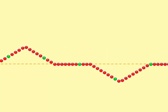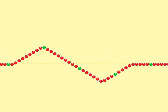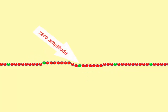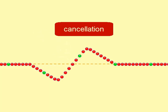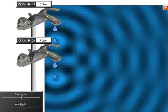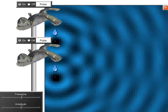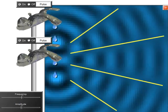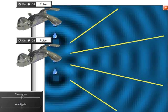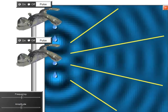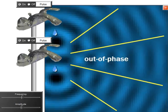Destructive interference is when the crest of one wave and the trough of another overlap and their individual effects are reduced. The result is a wave of lower or no amplitude called cancellation. You can see an interference pattern in water. There are regions of destructive interference where crests and troughs overlap and have zero amplitude. We say the waves are out of phase.